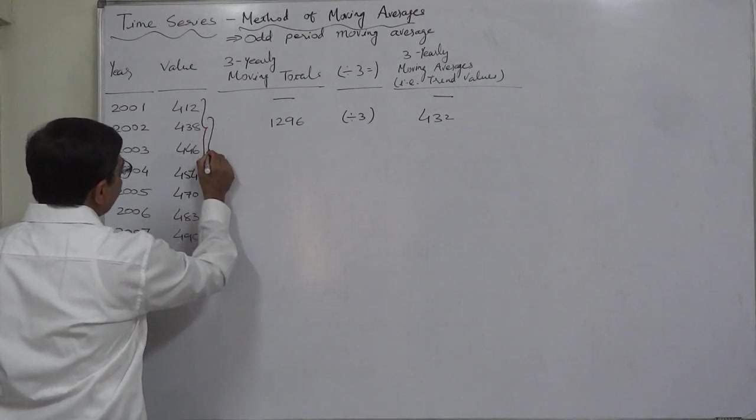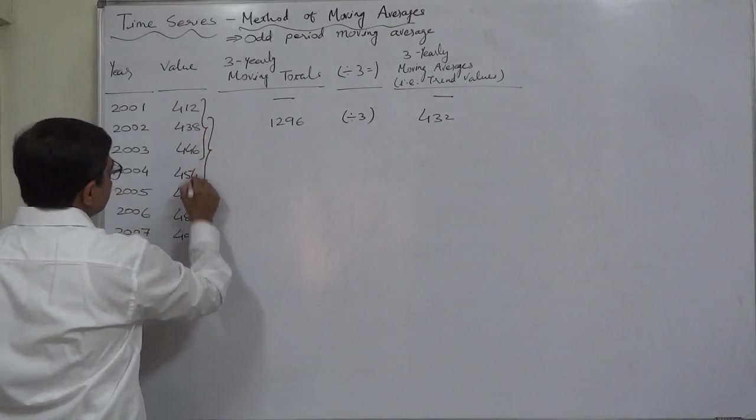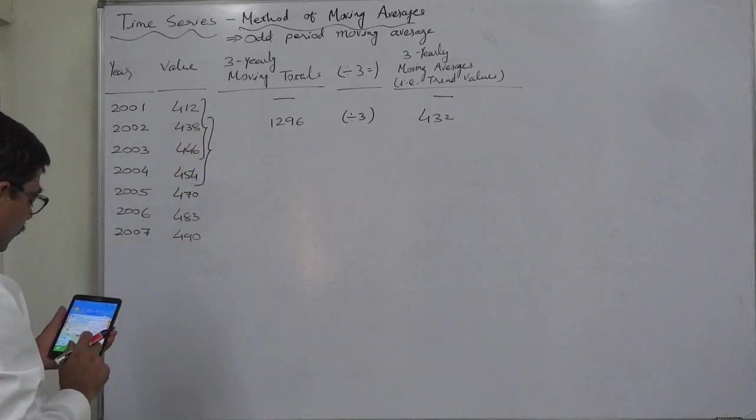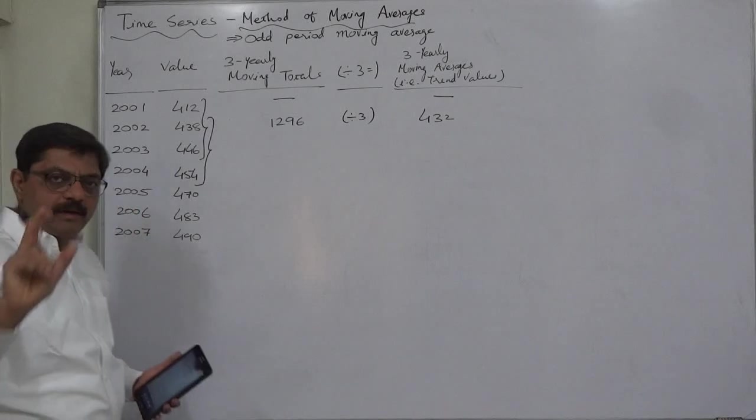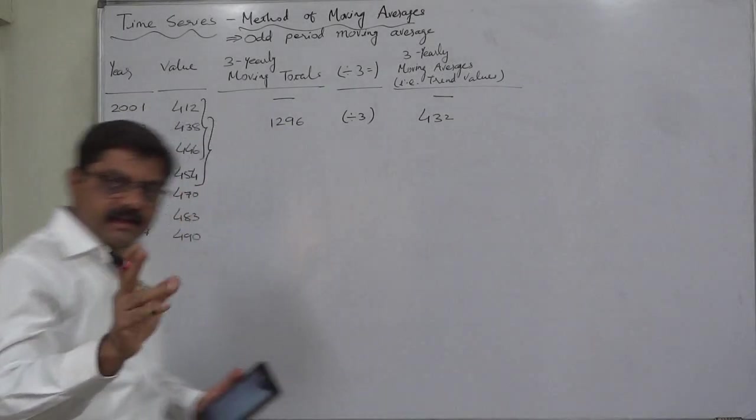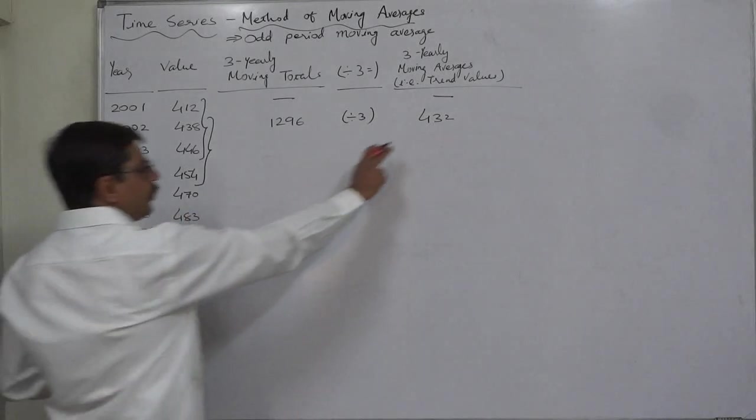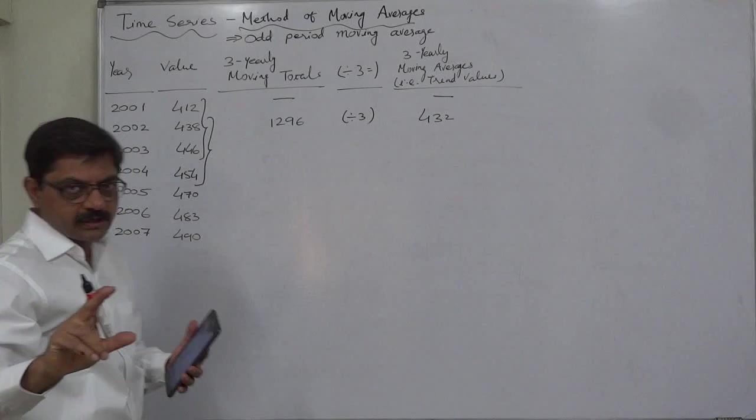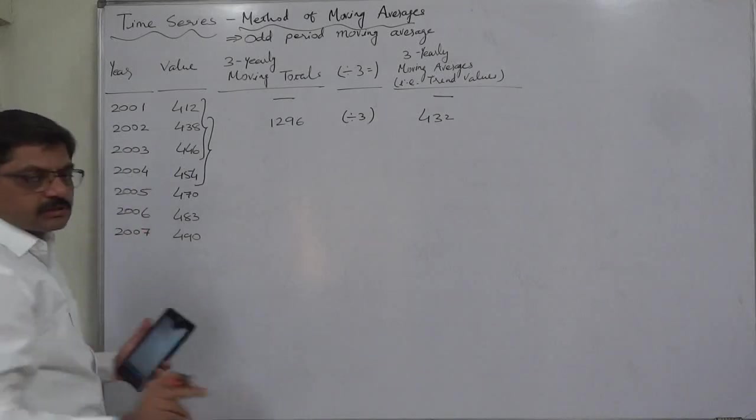Now we need to find the total of three years - they are second year, third year, and fourth year. Total of second, third, and fourth. Again that will be total of three. We shall divide it by three and that will be the moving average for the second block of three years - they are second, third, and fourth year: year 2002, 2003, and 2004.